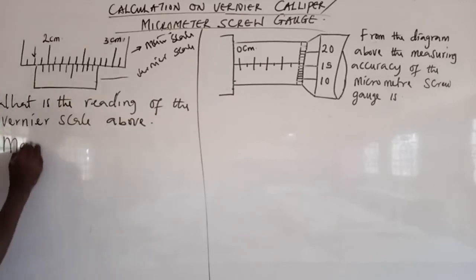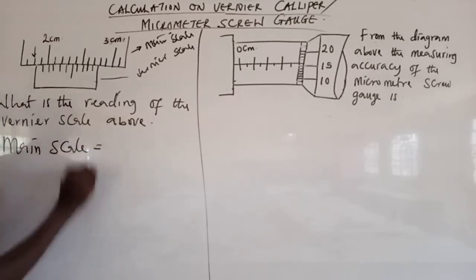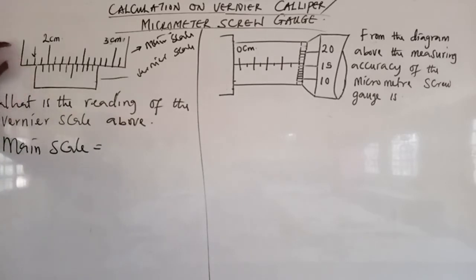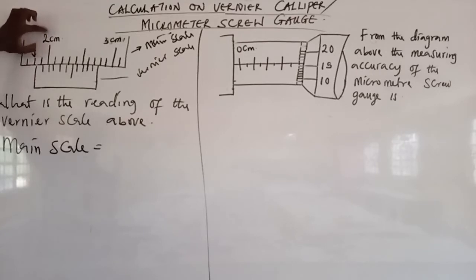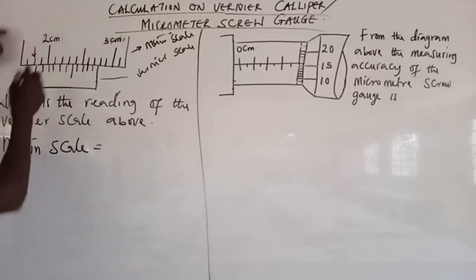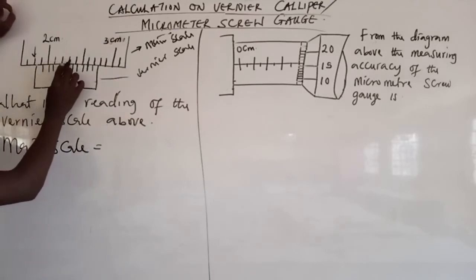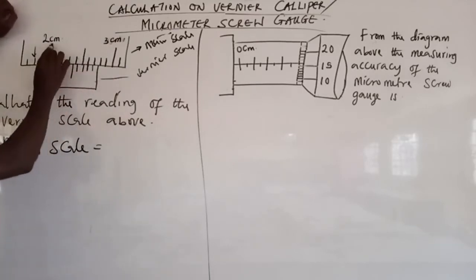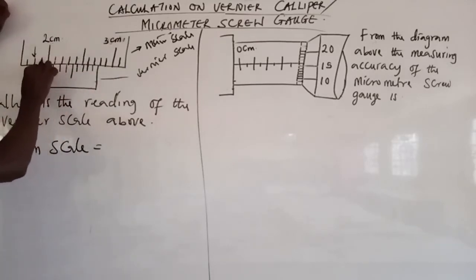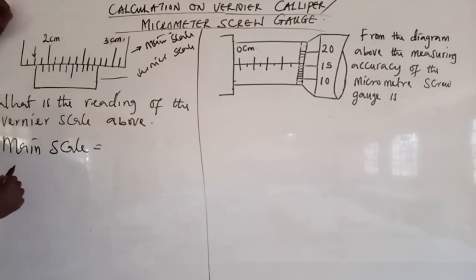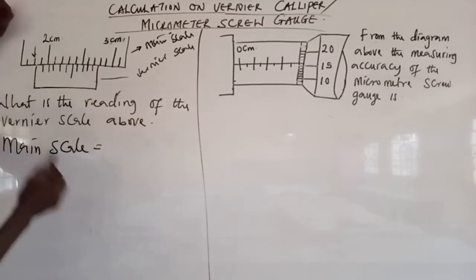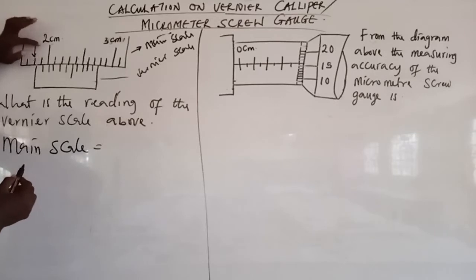My main scale reading is found as follows: the nearest marked value is 2 cm. Each small division is 0.1 cm. The reading point is 2 divisions before 2 cm, so 0.1 plus 0.1 equals 0.2. Subtracting 0.2 from 2 cm gives 1.8 cm. That is the main scale reading — this point here is 1.8 cm.